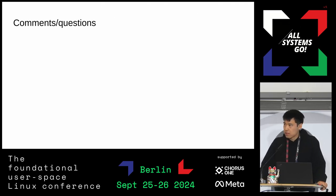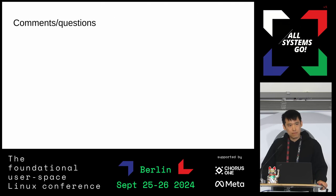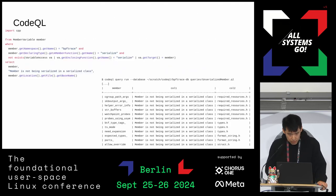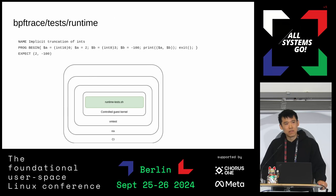Any questions? The first question: what was the name of the tool you used to test on VMs with different kernel versions? It's VMTest. If you just Google 'VMTest' and my GitHub handle D-A-N-O-V-I, it'll be there.